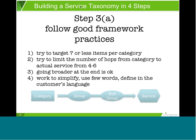Here are some good general framework practices to follow — not unlike what you do when you create a good incident classification schema. Try to target seven or fewer selections per category at your highest level. Try to limit the number of hops from the highest level category to the actual service to four to six. The schema is a balancing exercise in breadth and depth — going from general to specific, smaller choices to more choices at the end. Going broader at the end is fine; you might even have 10 to 15 items under a subgroup because you're drilling down to the customer's real focused interest level. Work to simplify, use as few words as possible, and define services in the customer's terms.